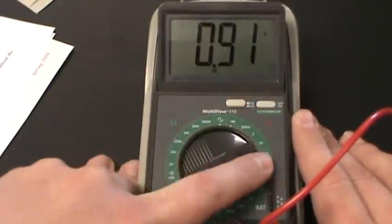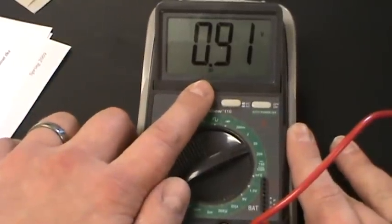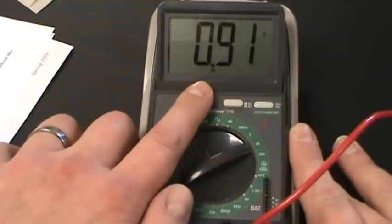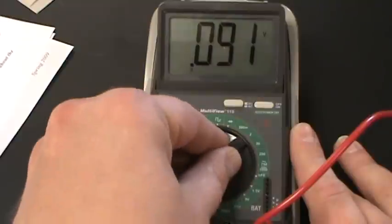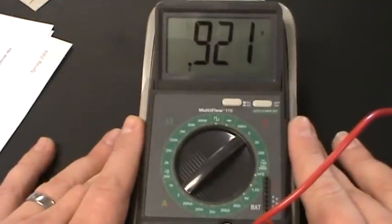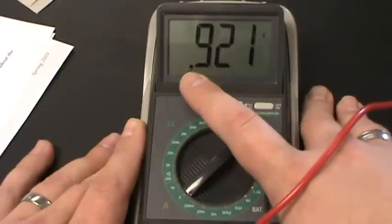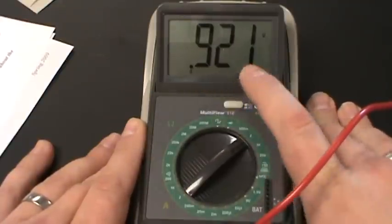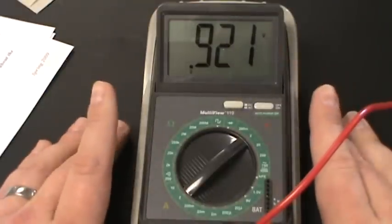So for your measurements, you should use whichever one of these settings gives you the most decimal places, the most significant figures of information you can get. So let's switch this down to 2. That looks pretty good. Again, you see the decimal point moved, so this is 0.921 volts.